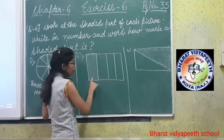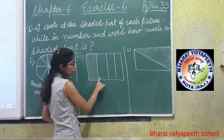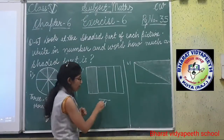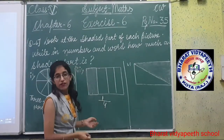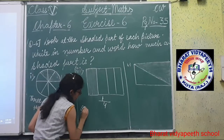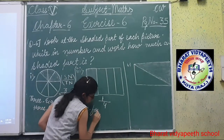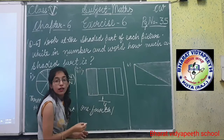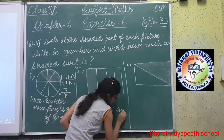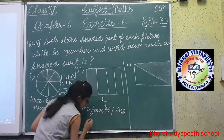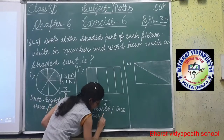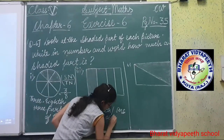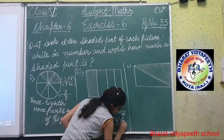Now see the third one. Total number of parts: 1, 2, 3, 4. Clear? Now the shaded part: 1. How can we write? 1 over 4. Second formula: 1 part out of 4.